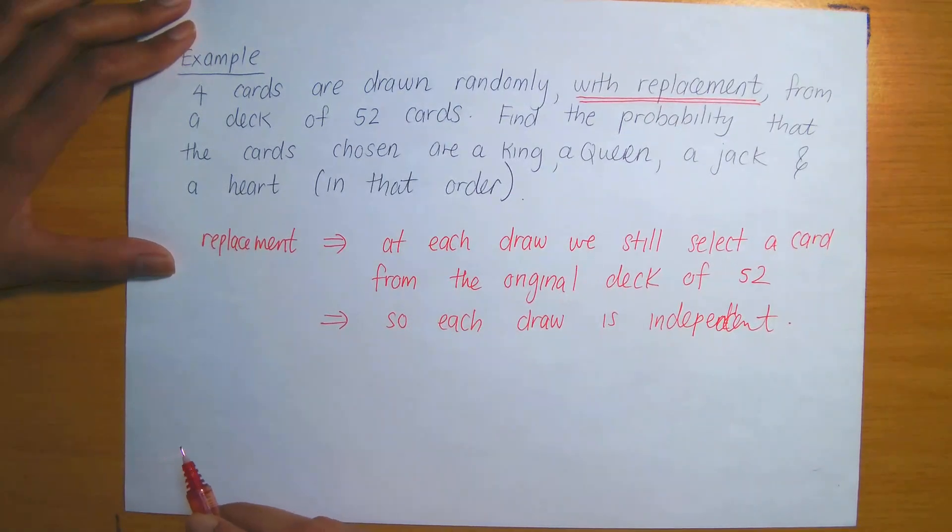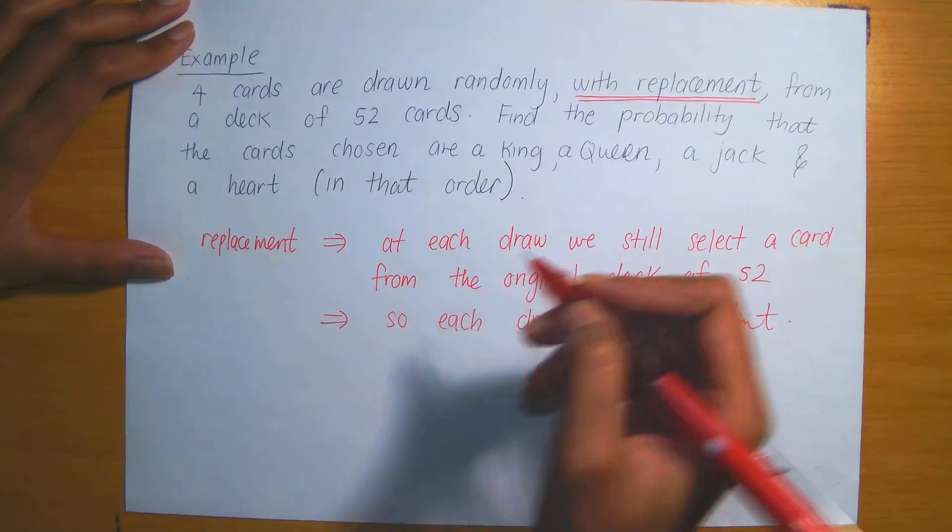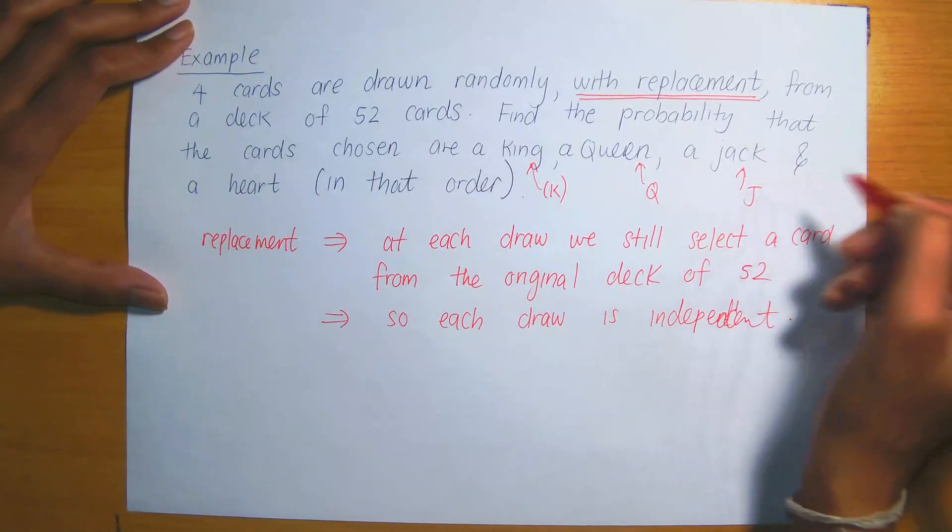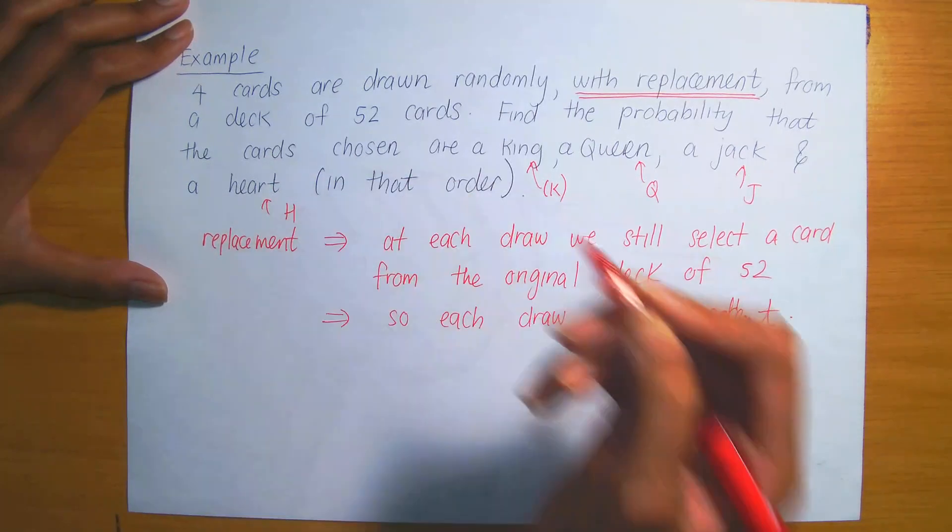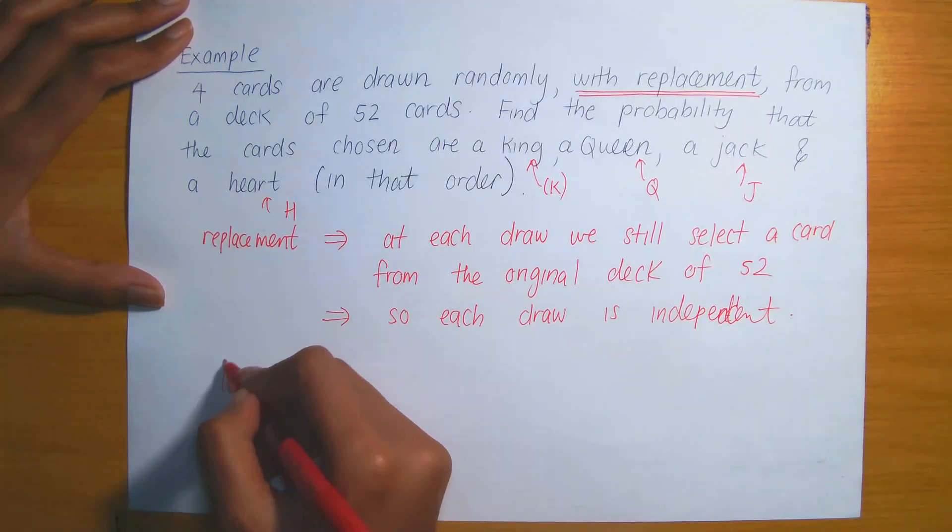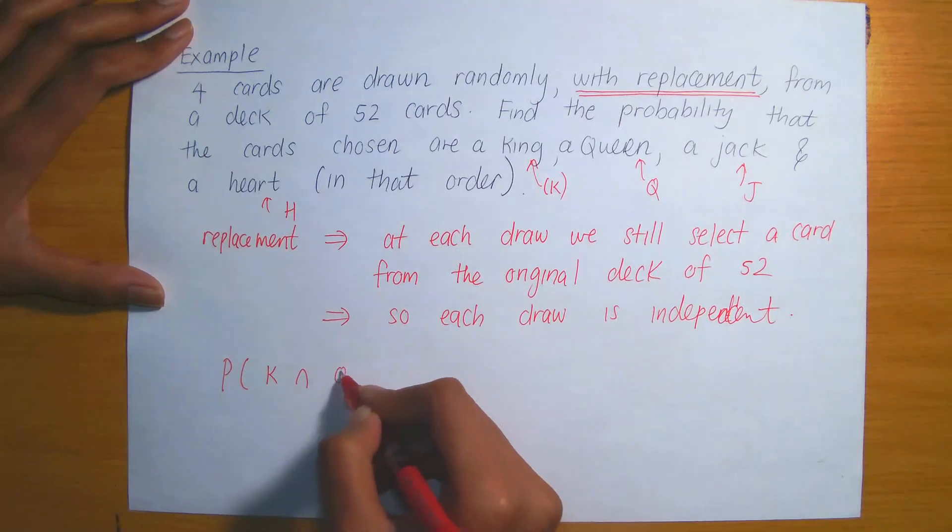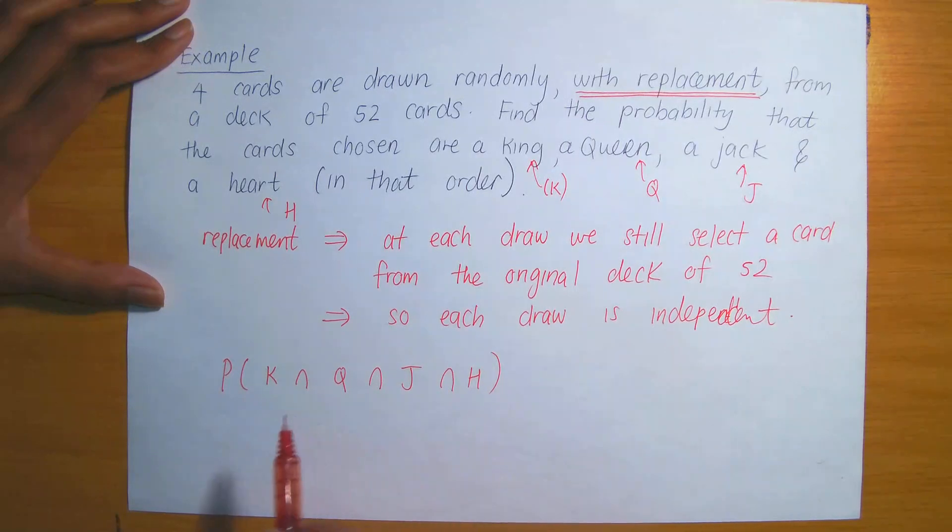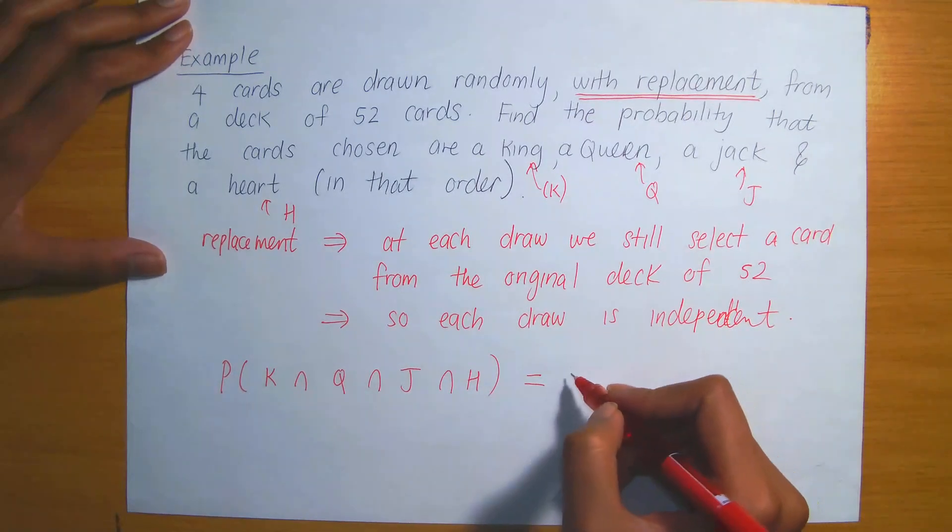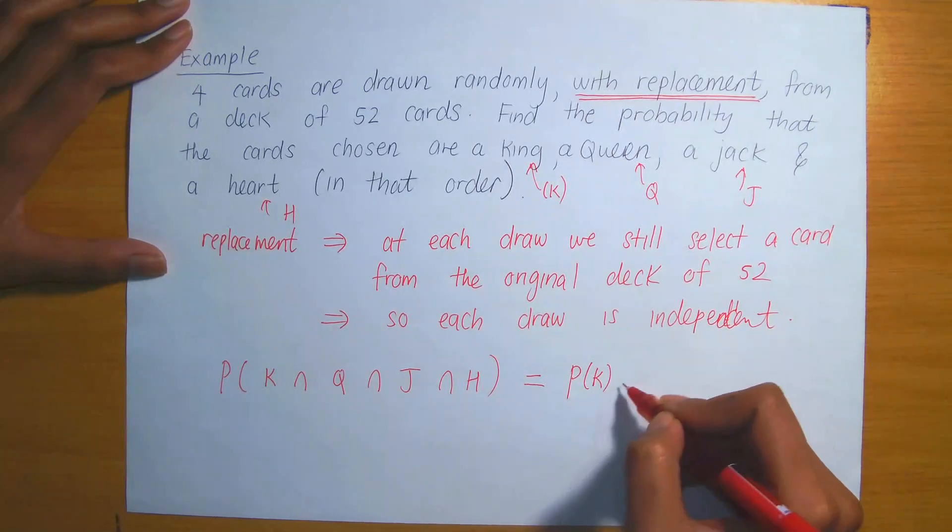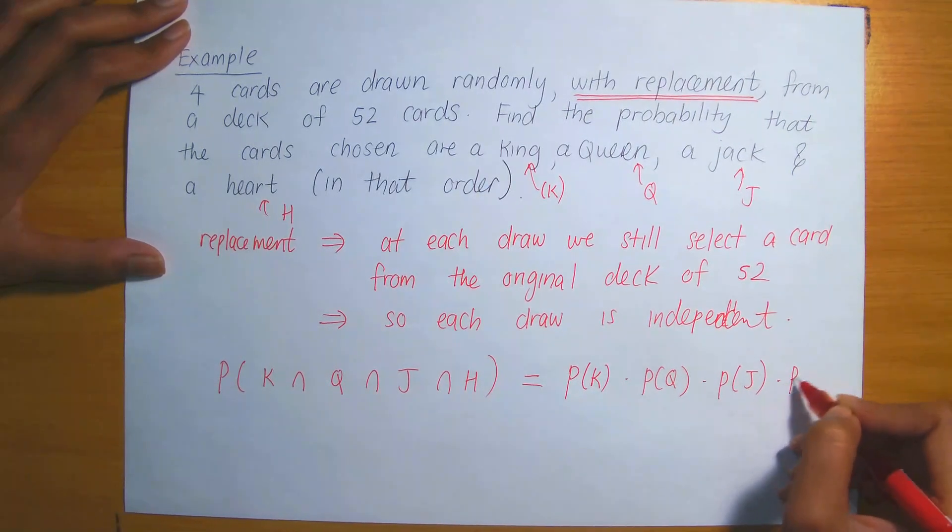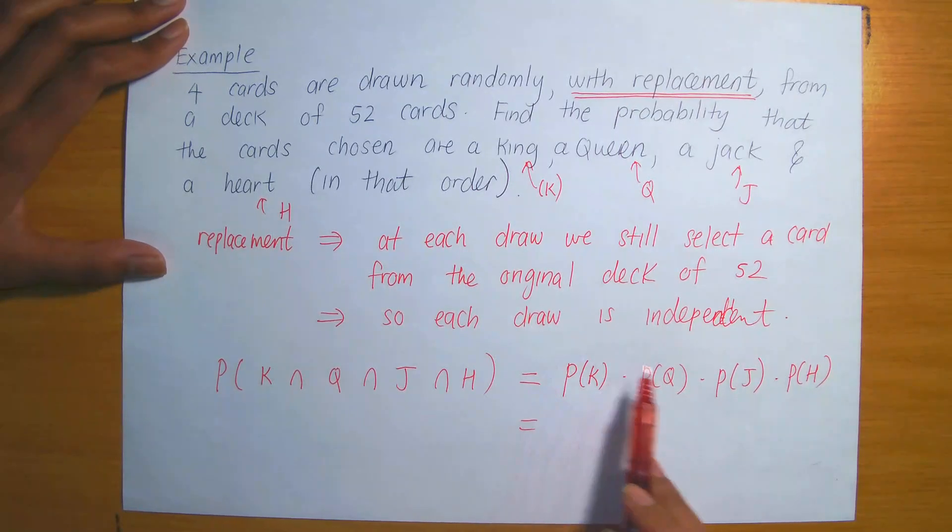Let's let K denote the event that we've drawn a king. K denotes king, Q denotes queen, J denotes jack, and H denotes a heart, selecting a heart. So essentially what we know, we know that each of these events are now going to be independent because each draw is independent, so we want the probability of K intersection Q intersection J intersection H, the probability of selecting a king, queen, jack, and a heart. And based on the multiplication law that I just mentioned to you in the previous slide, this is just going to equal to the probability of selecting a king being multiplied to the probability of selecting a queen times the probability of selecting a jack times the probability of selecting a heart. We now need to write down the respective probabilities.